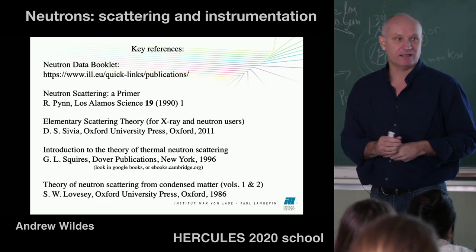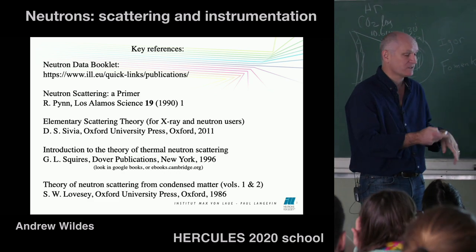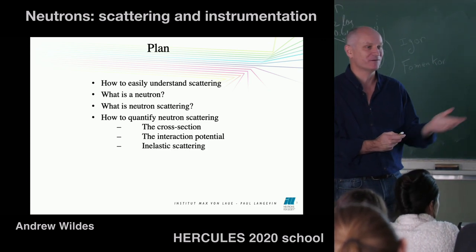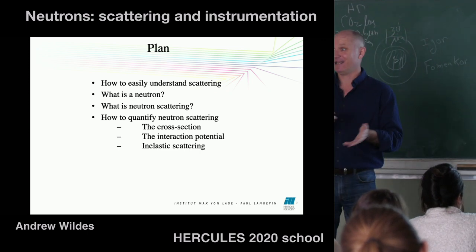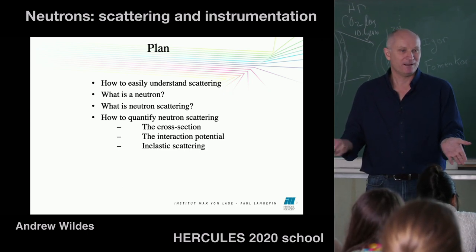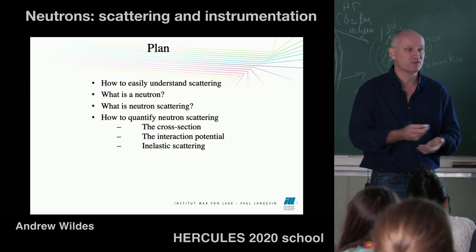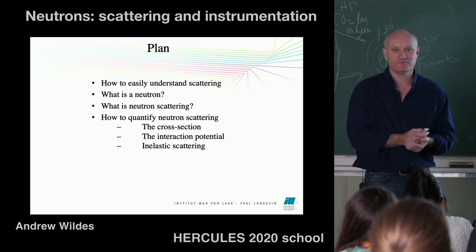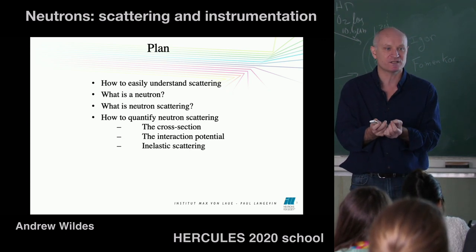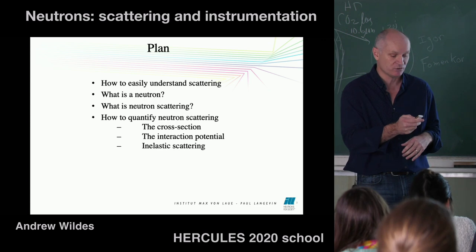Most of what I'm going to say today is on a pretty low level. If you want more depth, I recommend those other references. The plan for today: first, if you're interested in scattering at all, you'll be able to leave after the third slide — it's how to easily understand scattering in general. Then I'll go into the specifics of neutron scattering: what is a neutron, what is neutron scattering, and how to quantify it. There's no point doing science unless you're getting numbers out at the end.